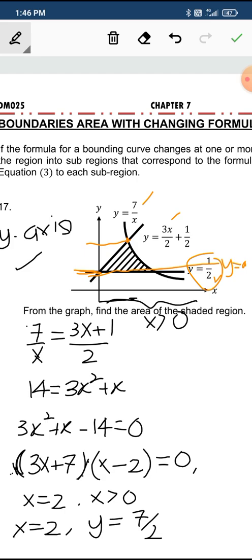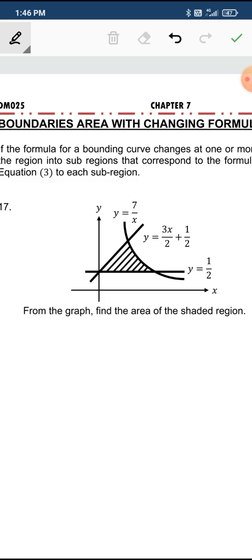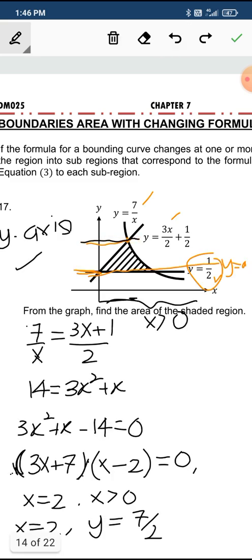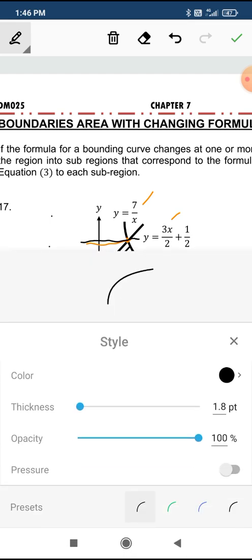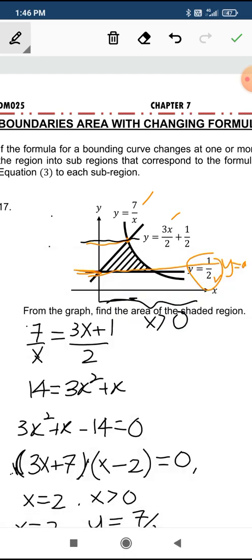So we have the upper limit and the lower limit. Let me erase this. So we have here, this is y. This is y equals 7 over 2. This is y equals half.